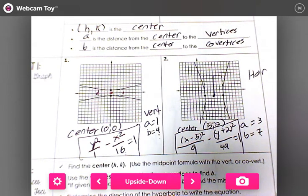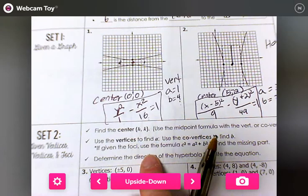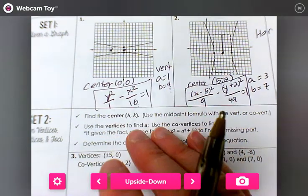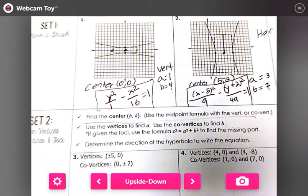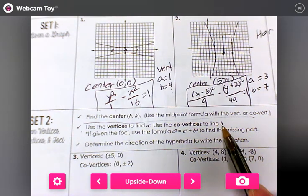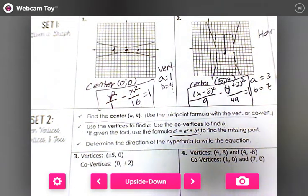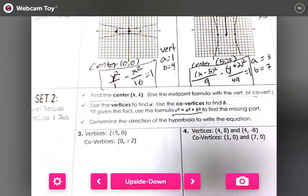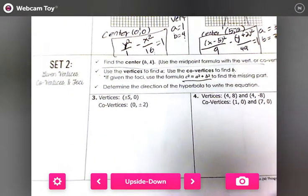We need to be able to find the standard form if we're given the vertices and co-vertices. The reason I really like these notes is because they give you step-by-step what you're supposed to do. First, find the center using the midpoint formula with the vertices or co-vertices. Step 2, use the vertices to find a, use the co-vertices to find b. If given the focus point, you use the formula c² = a² + b² to find the missing part. And then finally, determine the direction of the hyperbola to write the equation.